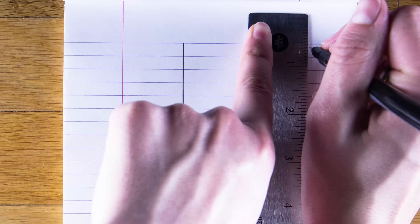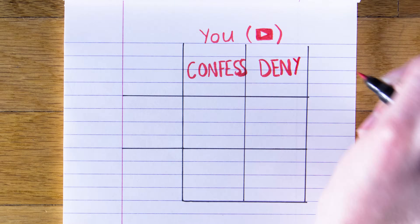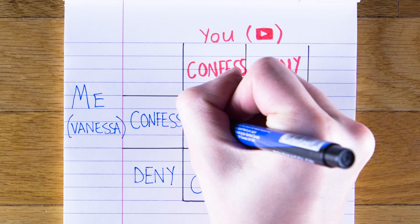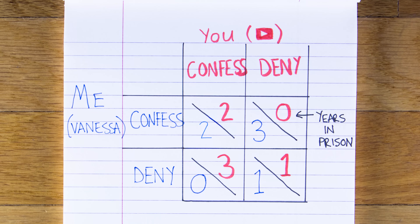And there's a catch. If you deny the crime and say I'm guilty, you walk free, but I'm in prison for three years. And I could deny the crime and pin it on you, but then you're in prison for three years. If we both blame each other, we each serve two years in prison. And if we both deny and stay quiet, we each serve one year in prison.